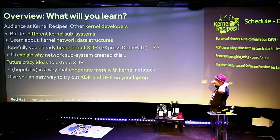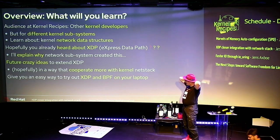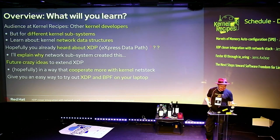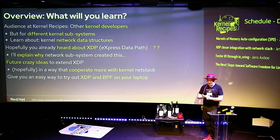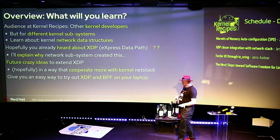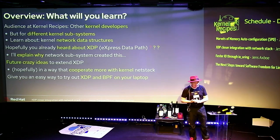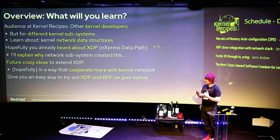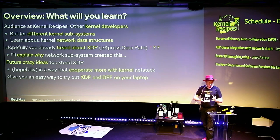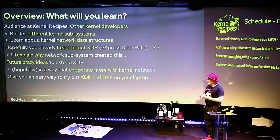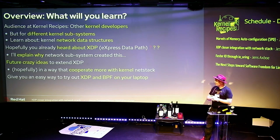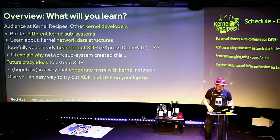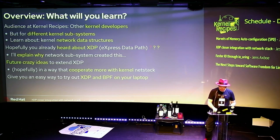I'll go into and explain why the network stack people did this and why David actually accepted this stuff. And then I'll go into even more future crazy ideas — David is here, so you can hear some of the crazy ideas so he won't yell too much at me when you see the patches. I'll explain how we want this XDP stuff, which can bypass the kernel, to cooperate more with the network stack. And I'll give you an easy way to try out XDP and run BPF code on your laptop — you'll have to wait until I reveal the GitHub repo.